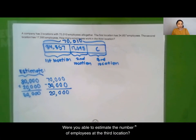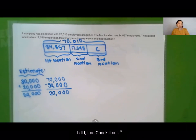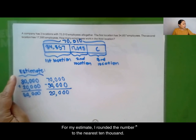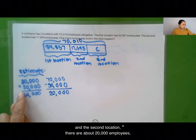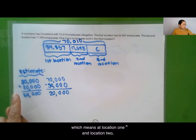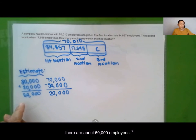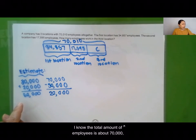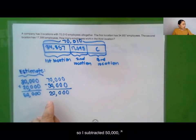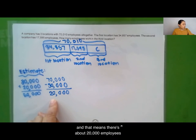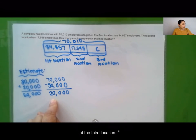Were you able to estimate the number of employees at the third location? I did too. For my estimate, I rounded the numbers to the nearest 10,000. So the first location has about 30,000 employees and the second location has about 20,000 employees, meaning locations one and two together have about 50,000 employees. Since the total is about 70,000, I subtracted 50,000, which means there are about 20,000 employees at the third location.